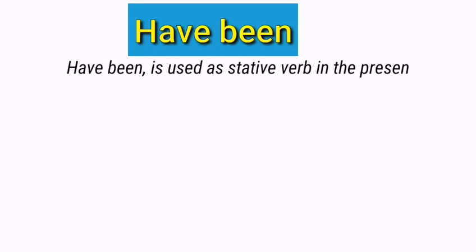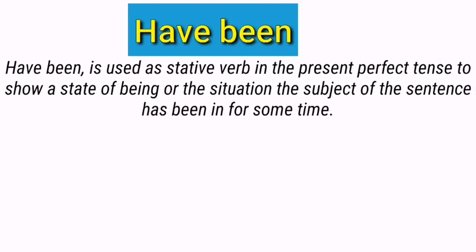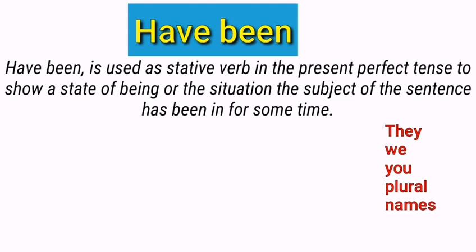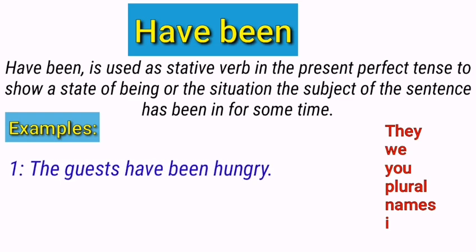'Have been' is used as a stative verb in the present perfect tense to show a state of being or the situation the subject has been in for some time. It is used with these subjects: they, we, you, plural names, and I. For example: The guests have been hungry. 'Have been' is used with the subject 'the guests,' and it shows their state — the guests are not doing something, only their state is described.